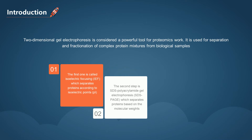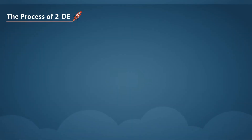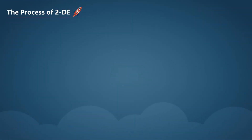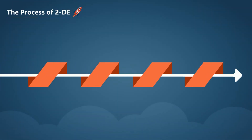Thus, thousands of proteins can be separated, and the information about isoelectric focusing and molecular weights can be obtained. The process of two-dimensional gel electrophoresis includes sample preparation, isoelectric focusing, SDS-PAGE, and the visualization of results.